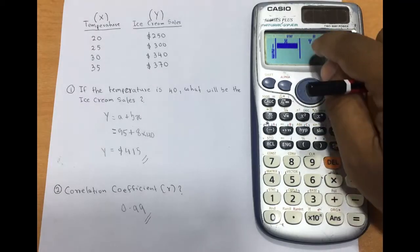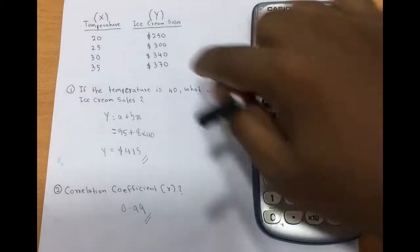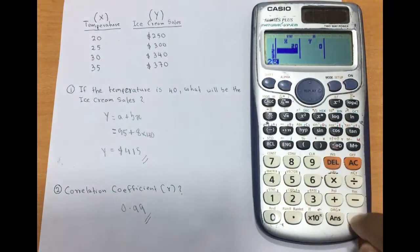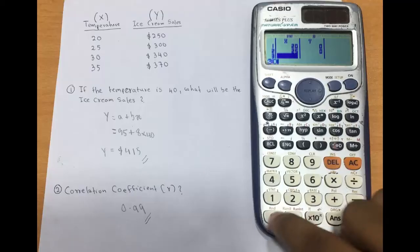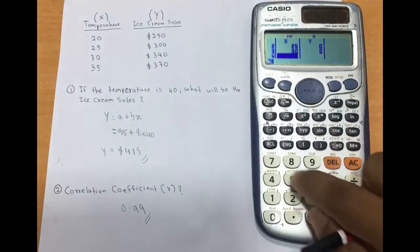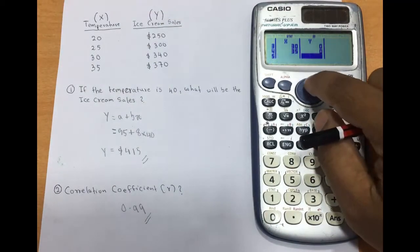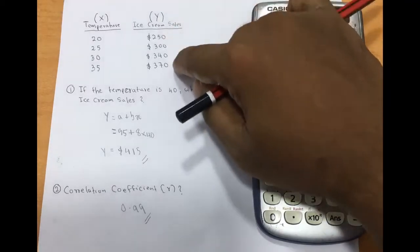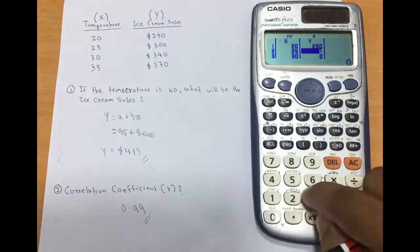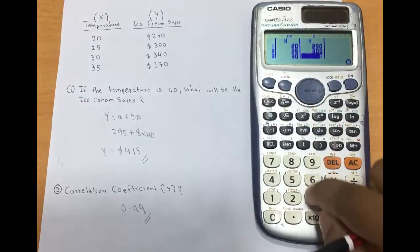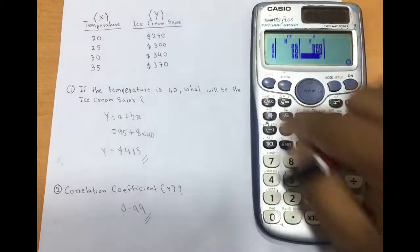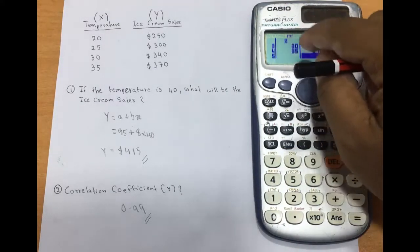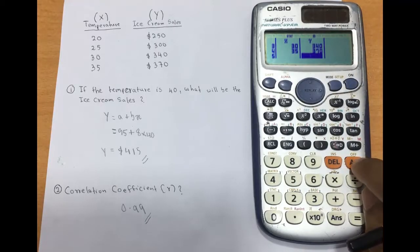Now you can enter all the x values and y values. Let's enter the x values first: 20 press equals, 25 press equals, 30 press equals, 35 press equals. Then using the arrow keys on the replay button, go to the top of the y column. Now enter the y values: 250 equals, 300 equals, 340 equals, 370 — make sure to press equals. Once you've entered all x and y values, press the AC button.